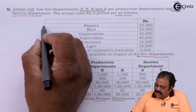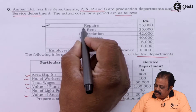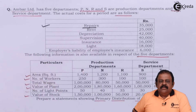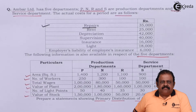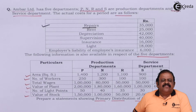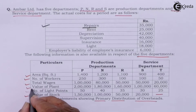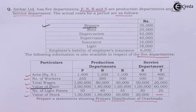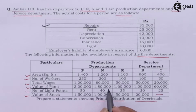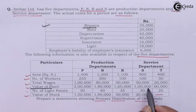The first expense is repairs. This we are required to allocate on the basis of value of plant and machinery, that is in the ratio of 2 lakh : 1,80,000 : 1,60,000 : 1,00,000 : 60,000.